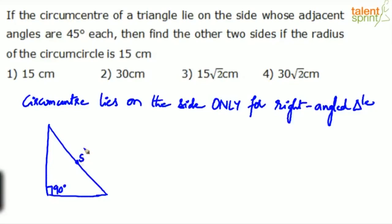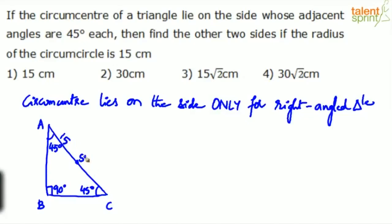The hypotenuse is generally denoted by s. Let the triangle be ABC. The adjacent angles are 45 degrees each — this angle is 45 degrees and this one is also 45 degrees. We need to find the other two sides, AB and BC, given that the radius of the circumcircle is 15.